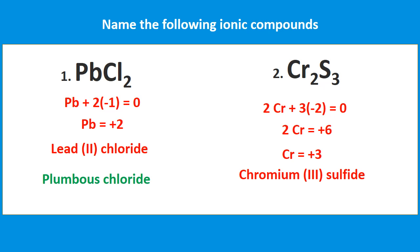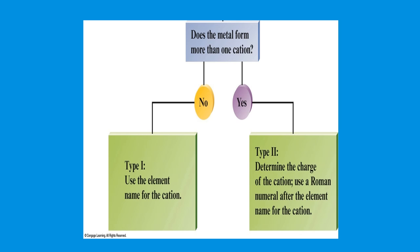Using the old naming system, lead(II) chloride would be called plumbous chloride. To quickly review: does the metal form more than one cation? If no, use the element name for the cation — it's a Type 1. If yes, determine the charge of the cation and use Roman numerals after the element name — it's a Type 2.